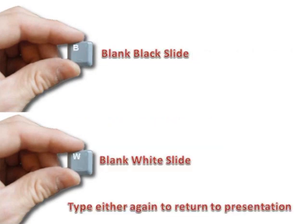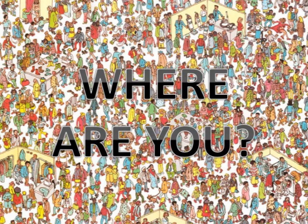Typing B will replace your current slide with a black slide, or if you prefer, a blackboard. Likewise, typing W toggles between a whiteboard and the current slide. I'll show you how these blank slides can be written on, if required, later in the presentation.